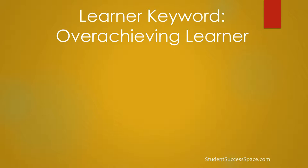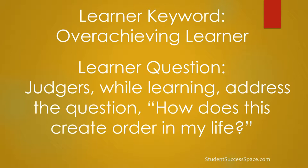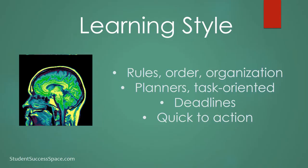The key word for the judger is 'overachieving learner.' As you can imagine, this is going to be the student that excels in a traditional classroom — the learner that all teachers want because they're just easy. The central question for judgers is: how does this create order in my life? How can you use it, how can you create order, how can you do some planning, and how can it really benefit and aid you?